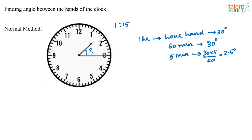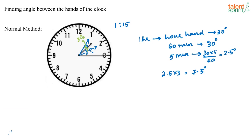The time here is 1:15. When it was 1 o'clock, the hour hand was at 1. In these 15 minutes, the angle covered by the hour hand is 2.5 × 3, since every 5 minutes it covers 2.5 degrees. So in 15 minutes, the hour hand has covered 7.5 degrees. From 1 to 2 the angle is 30 degrees, so 30 minus 7.5 leaves 22.5 degrees remaining.